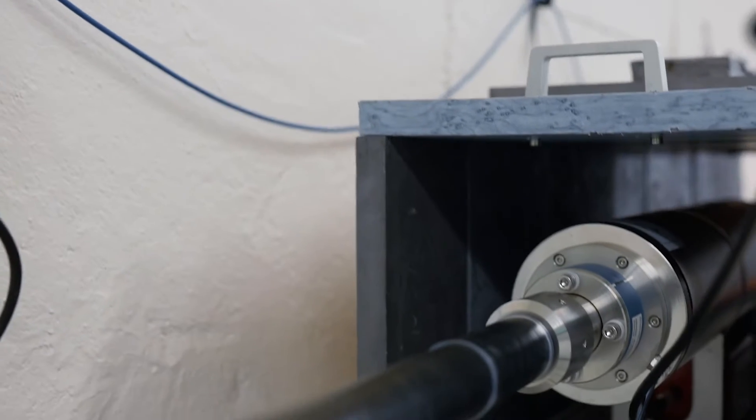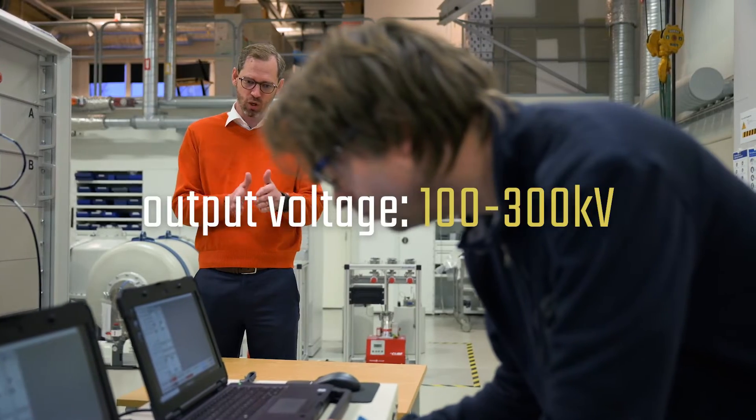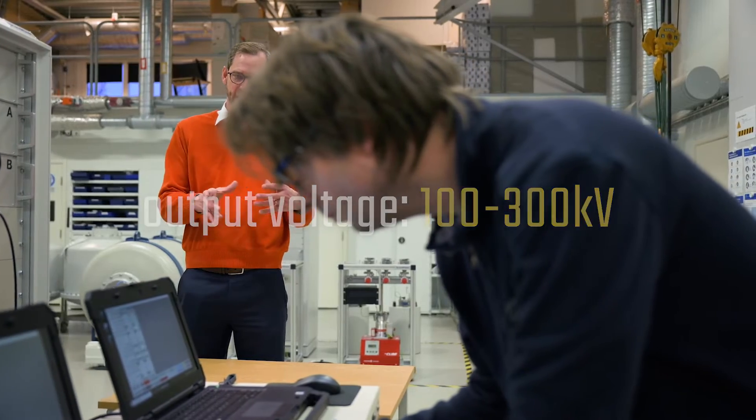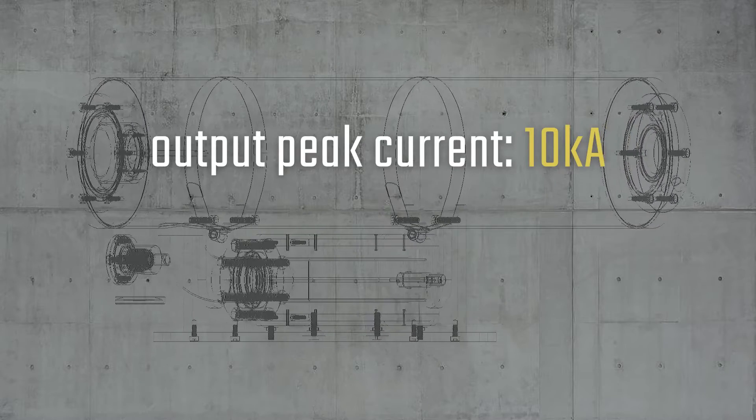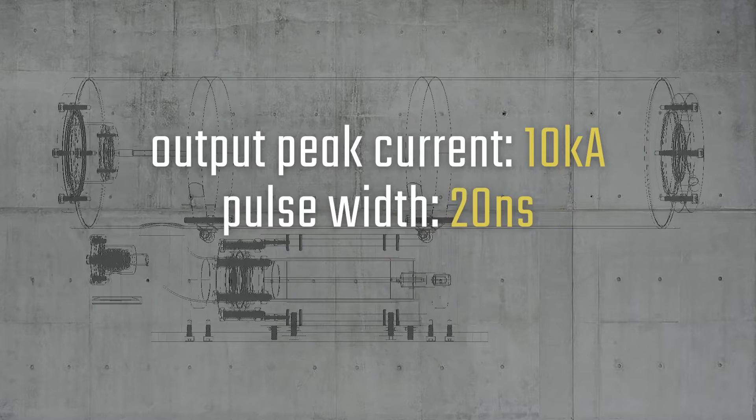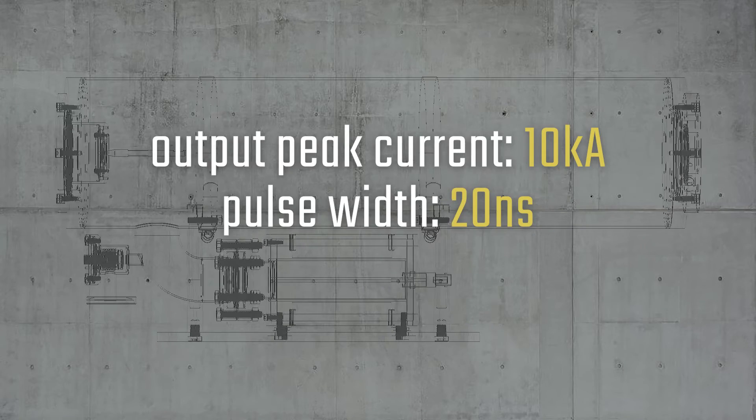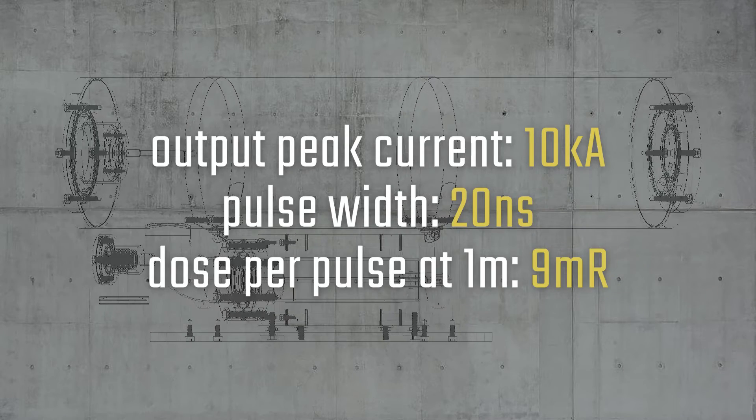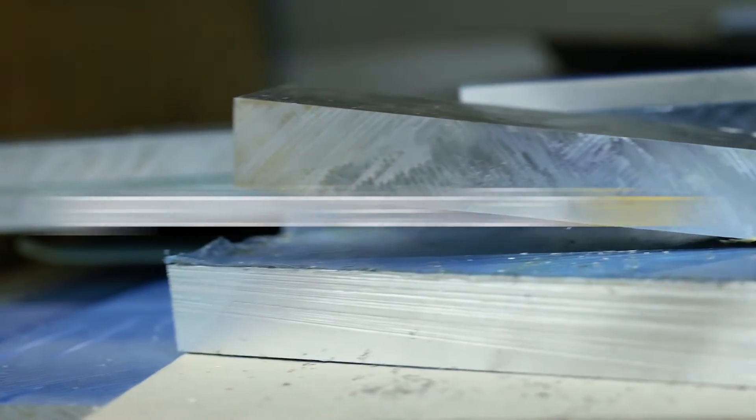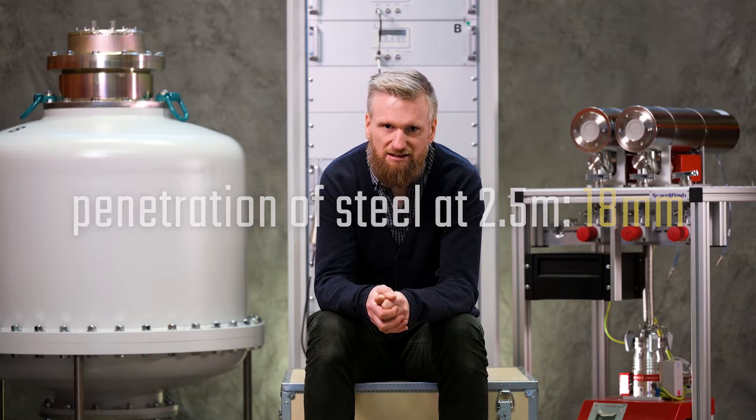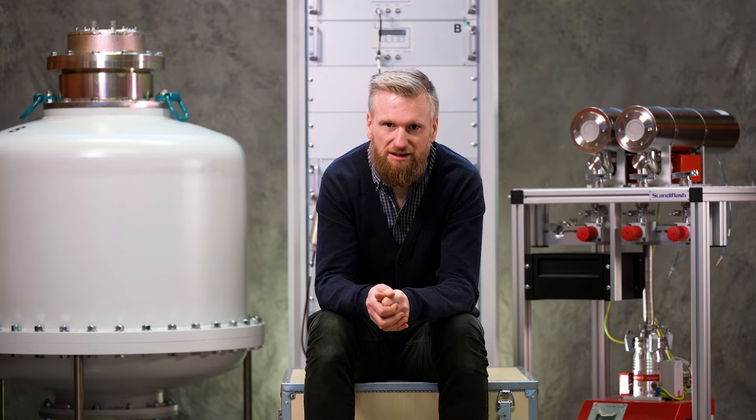The 300 has a variable energy output ranging from 100 to 300 kW. The output peak current is 10 kA and it generates a 20 ns short pulse. The dose per pulse at 1 meter is 9 mR. The 300 can penetrate 18 mm of steel at a distance of 2.5 meters.